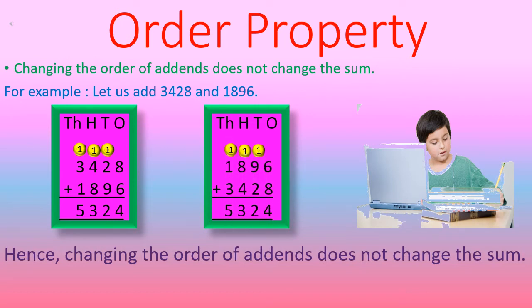In the previous video, we had learnt order property. Order property means that changing the order of addends does not change the sum. Addends are the numbers which we are going to add, and the sum is the answer after adding those numbers. So, order property tells us that changing the order of addends does not change the sum.